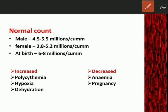The normal RBC count in males is 4.5 to 5.5 million per mm³. In females it is 3.8 to 5.2 million per mm³, and at birth it is the highest at 6 to 8 million per mm³. There are physiological as well as pathological conditions where RBC count is increased — such as in polycythemia and dehydration — or decreased, as in anemia and pregnancy.